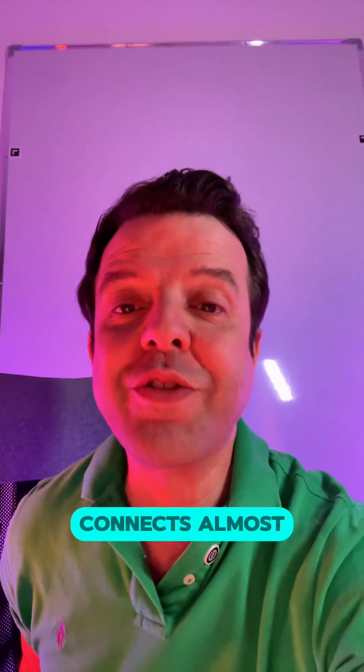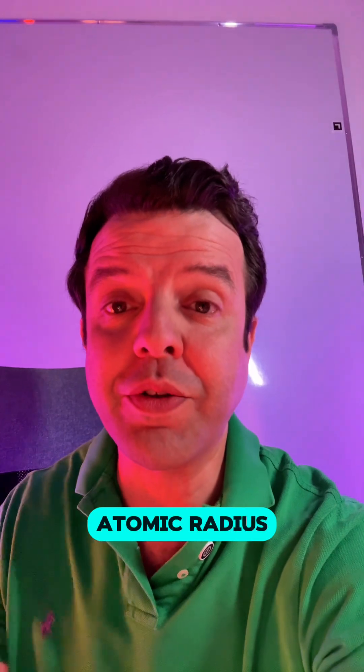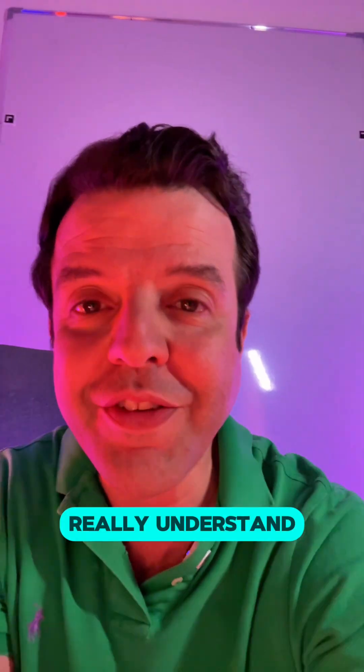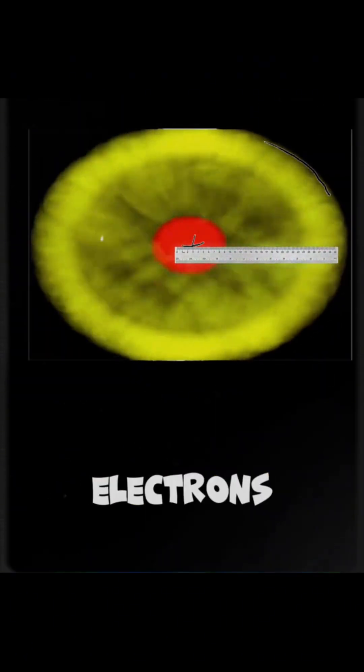If there is one concept that connects almost everything in A-level chemistry, it is this one: atomic radius. Take a moment to really understand it. Atomic radius is the distance between the nucleus and the outermost electrons of the atom.